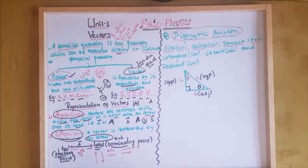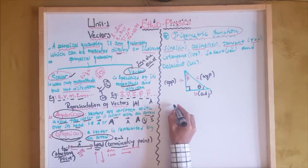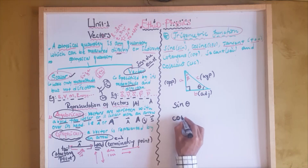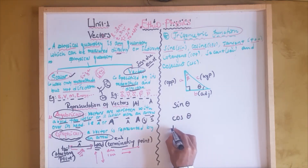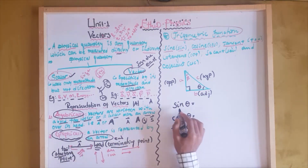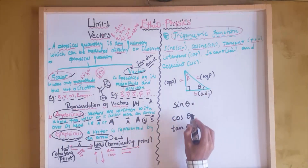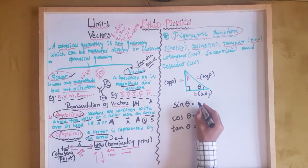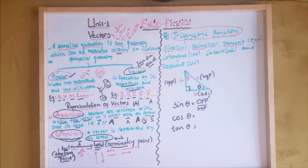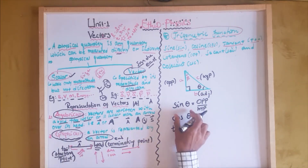We have sine, cosine, and tangent values. When you see sine theta, it is a trigonometric function. It is the ratio of the opposite side to the hypotenuse side. That's why we call it sine theta.